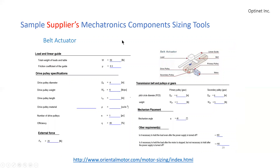Over here we see a supplier's component sizing tool by Oriental Motors. We see a belt-driven system with its mechanical stage and motors with pulleys and belts. You place the input variables in the relevant positions, click the button, and get the output. We will take a look at how we use this in our course in upcoming videos.